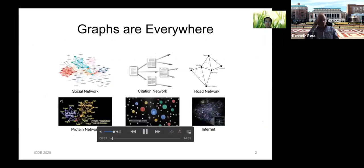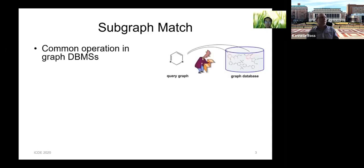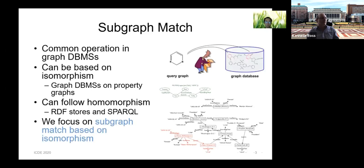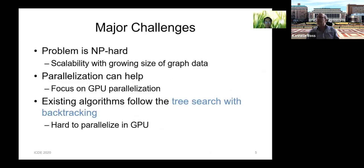Graphs are widely used in real life, such as social networks and knowledge graphs. Subgraph matching is a well-known problem when analyzing graph data. Our paper focuses on subgraph matching based on isomorphism. Traditional algorithms fail to process large graphs. One way to address this challenge is to employ GPU, which has the power of high parallelism. Existing backtracking algorithms are hard to parallelize on GPU, so we need to develop new GPU-friendly algorithms.